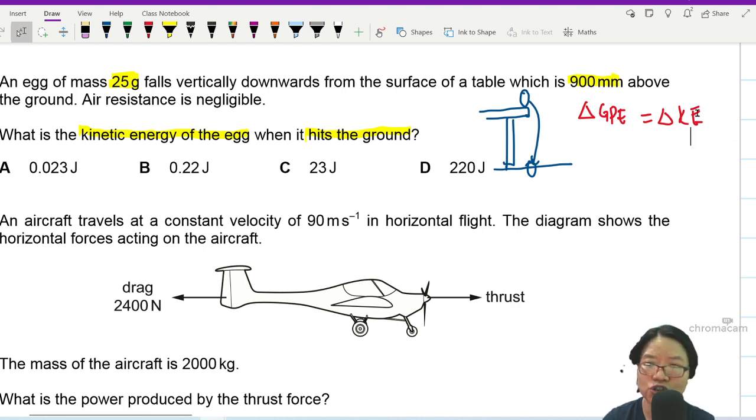So to find the kinetic energy of my egg, I just need to find the change in GPE.